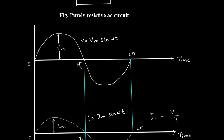Here this is pi or 180 degrees and this is 2 pi or 360 degrees — a complete rotation. So this is one complete cycle.